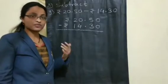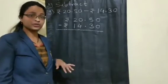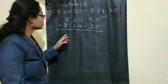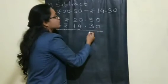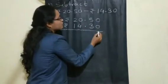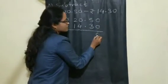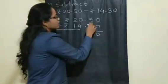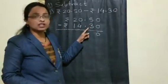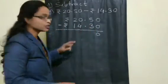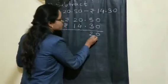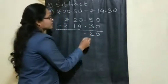In the last session we studied how to do addition. In subtraction also, start from the right side. 0 minus 0 is 0. Now from 5, remove 3 — how much left? 2. So write 2 and the dot as it is.